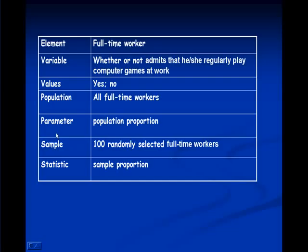The parameter is the population proportion, which is p. The sample is just the 100 randomly selected full-time workers, and the statistic is the sample proportion, which is p hat.